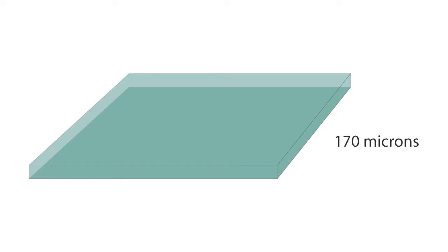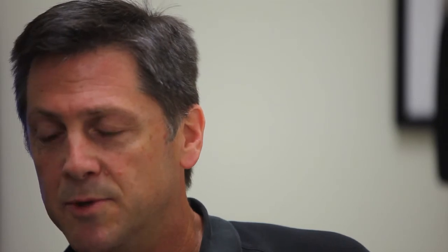Oil immersion objectives are typically designed to work through a cover slip thick optical substrate, a piece of glass that's about 170 microns thick. That's part of the optical design and also part of the limitation of this type of objective.